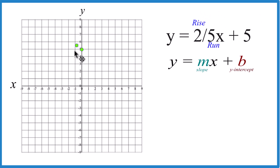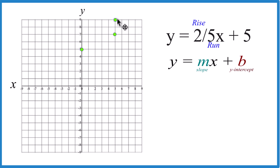Go to our y-intercept here, rise 1, 2, and we run 1, 2, 3, 4, 5. Let's do that again — we'll rise 1, 2, and run 1, 2, 3, 4, 5.